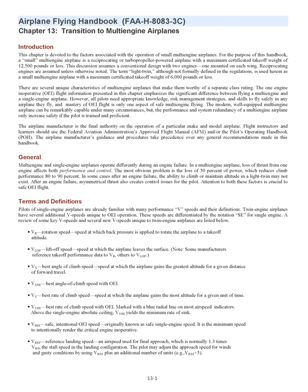Chapter 13: Transition to Multi-Engine Airplanes. This chapter is devoted to the factors associated with the operation of small multi-engine airplanes. For the purpose of this handbook, a small multi-engine airplane is a reciprocating or turbopropeller-powered airplane with a maximum certificated takeoff weight of 12,500 pounds or less. This discussion assumes a conventional design with two engines, one mounted on each wing. Reciprocating engines are assumed unless otherwise noted. The term 'light twin,' although not formally defined in the regulations, is used herein as a small multi-engine airplane with a maximum certificated takeoff weight of 6,000 pounds or less.